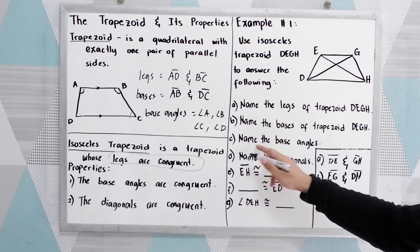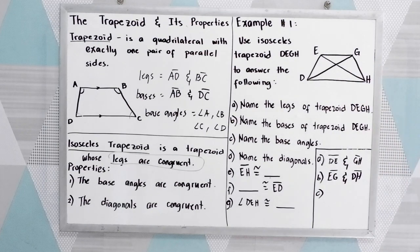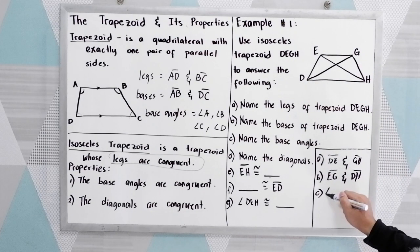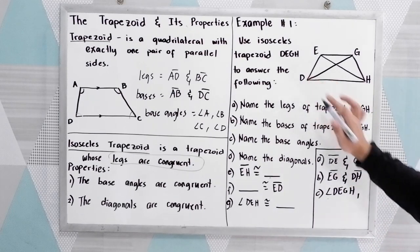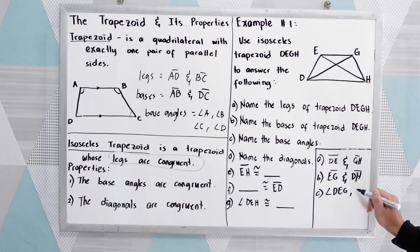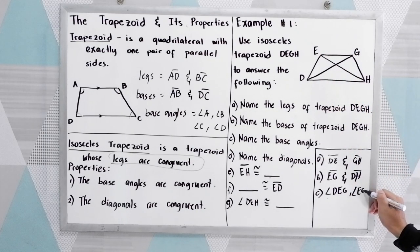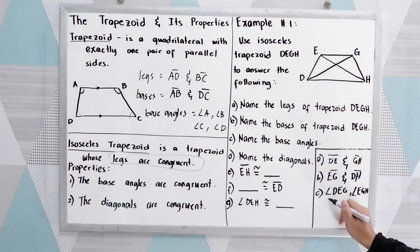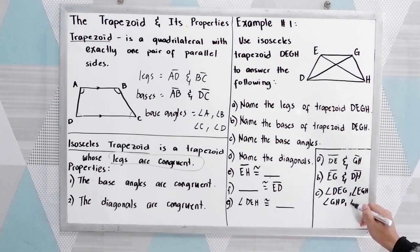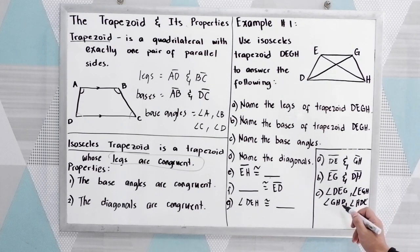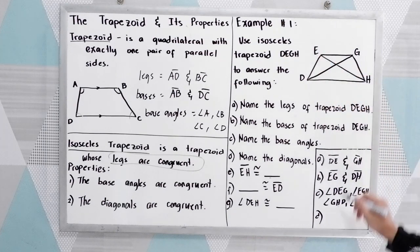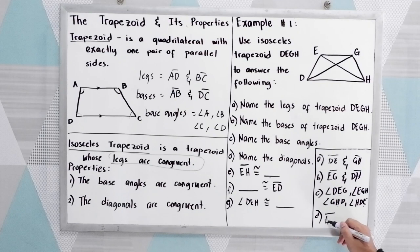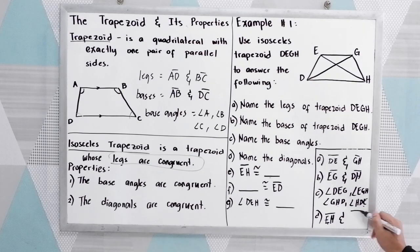Letter C: name the base angles of trapezoid DEGH. Our base angles are angle DEG, angle EGH, angle GHD, and angle HDE. Letter D: name the diagonals. The diagonals are EH and DG.